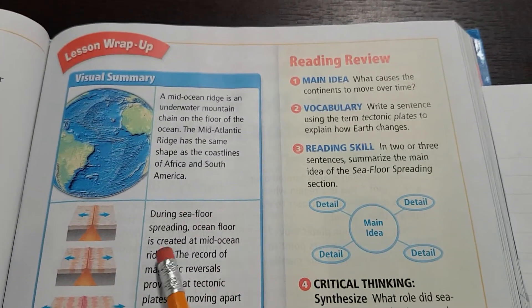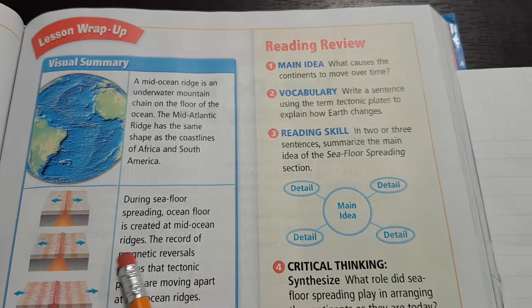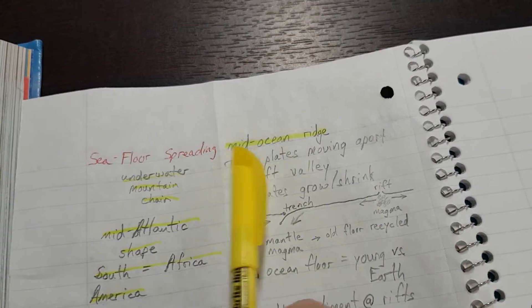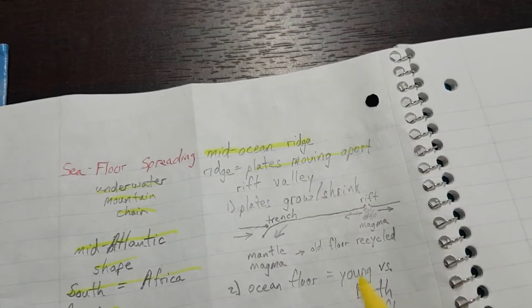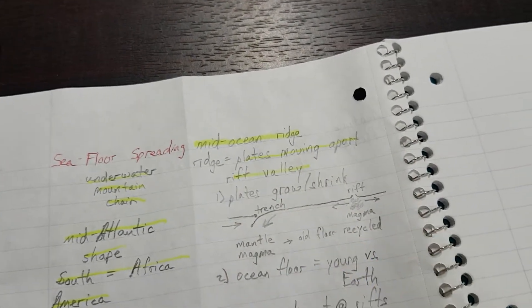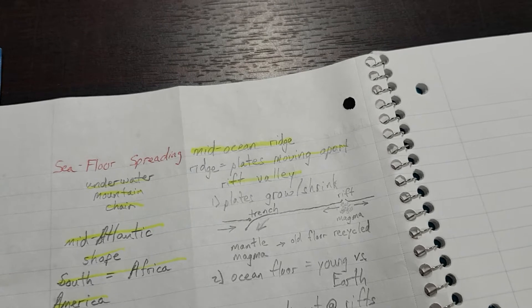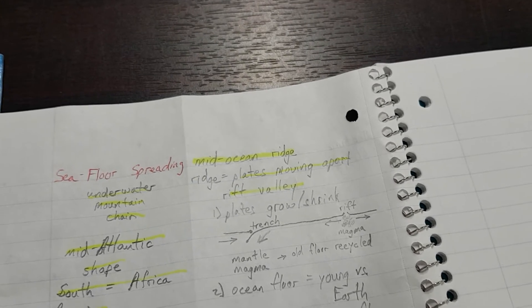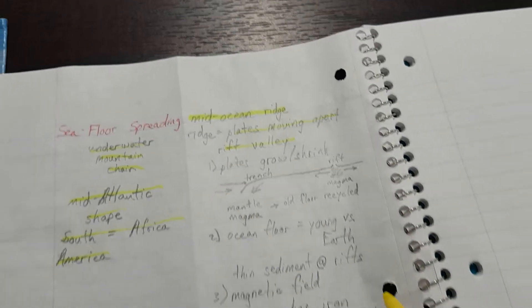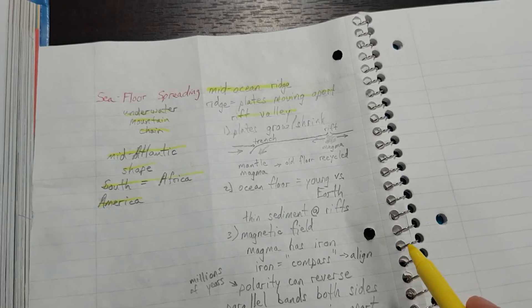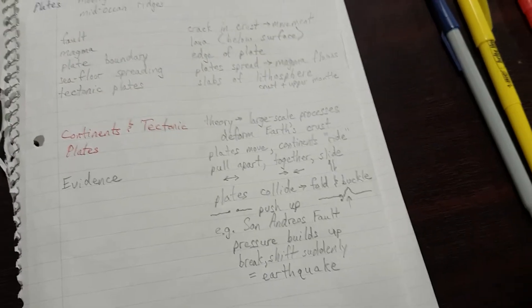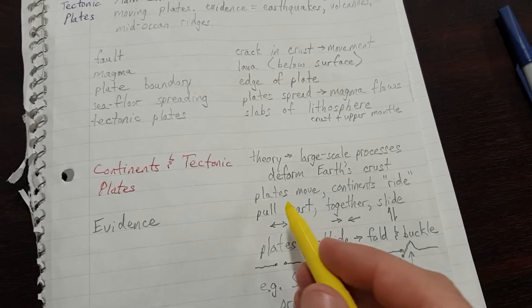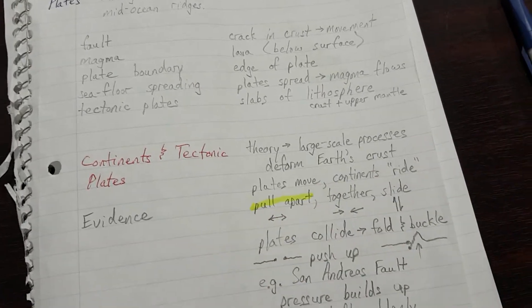During seafloor spreading, ocean floor is created at mid-ocean ridges. Okay. So, at the mid-ocean ridge, plates are moving apart. It's called a rift valley. Okay. It's spreading. Where did we use the word spread? Over here on the front, we talked about how plates can pull apart or spread.